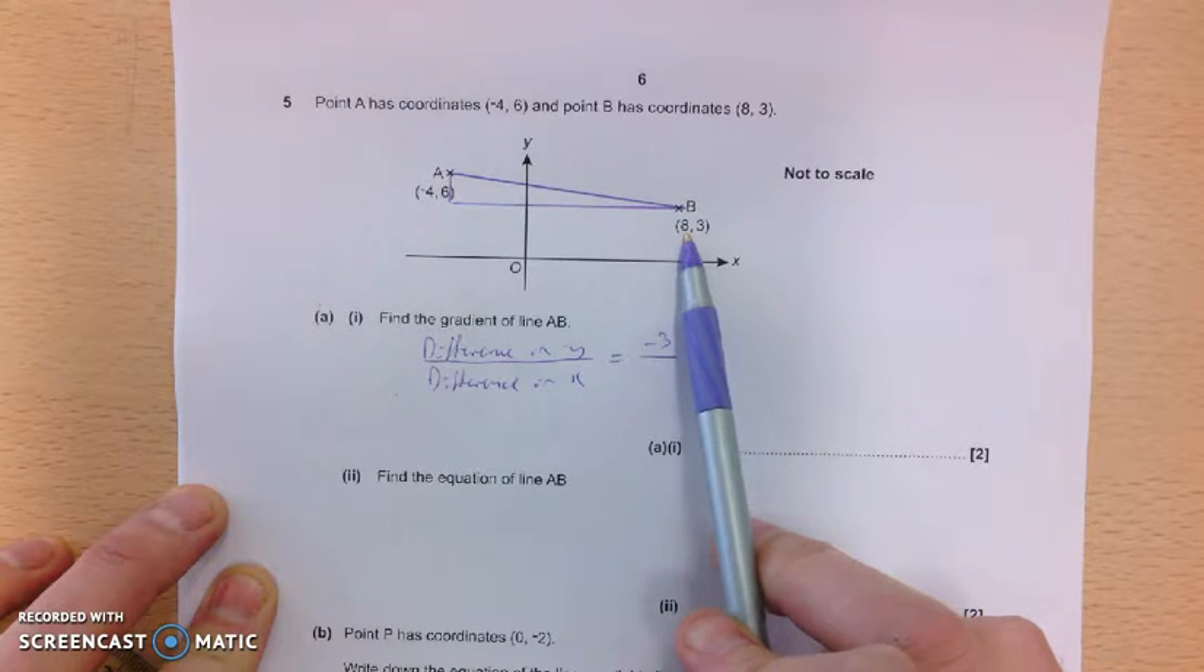And the difference in the x's, we've got an x coordinate here which is minus 4, and an x coordinate here of 8, so from minus 4 to 8 is 12. So my gradient is minus 3 over 12, so we should simplify that fraction to get minus 1 quarter. So there's our gradient.